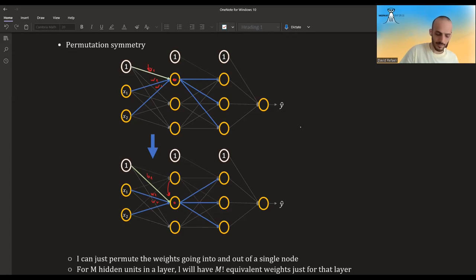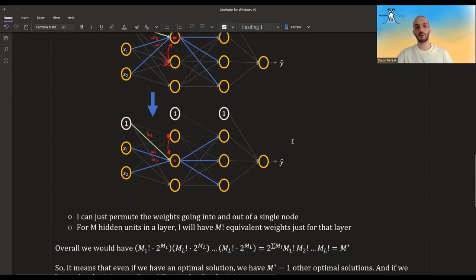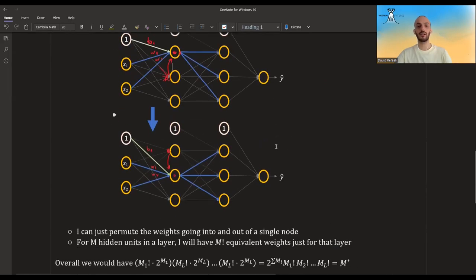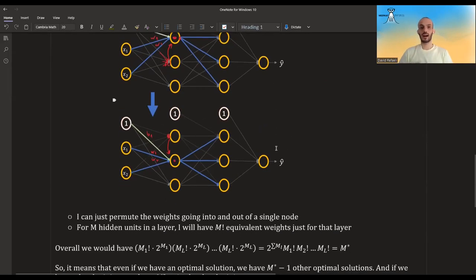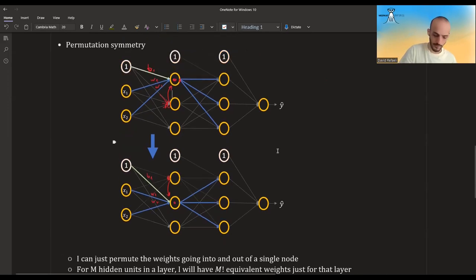And instead, I'm taking all the weights that came here, and I'm moving them here. So all the weights that came here are now pointing here. So if we do this for all the weights that go into the node, but we also do this to all the weights that go out of the node, so we also move w3, w4, and w5 from here to here, and also move this up.